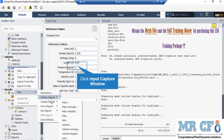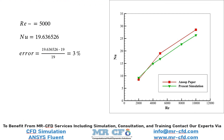After that, we again right-click on Report Definitions, go to New, then Surface Report, and select Area Weighted Average. Finally, in this slide, you can see that for a Reynolds number approximately equal to 5000, we have calculated the Nusselt number to be equal to 19.6365. If you calculate the error for this value, you can see that an error of 3% exists between our data and the data obtained by the paper.